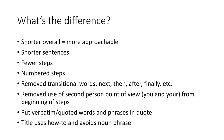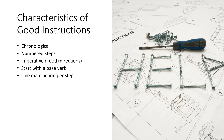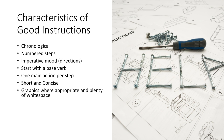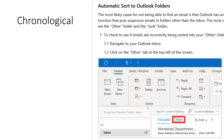The title uses 'how to' instead of a long noun phrase string. Part of what makes the numbered set better is that it's adhering to the characteristics of good instructions: it's chronological, uses numbered steps, has the imperative mood, starts with a base verb, has one main action per step, is short and concise, uses graphics where appropriate, provides plenty of white space, includes required materials, safety equipment, and special notices, provides feedback at the end of steps, and has an introduction, do-no statement, and a conclusion if needed.